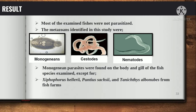I am Aaron Clark D. Zalsos and I will discuss the results. Most of the examined fishes were not parasitized. The metazoans identified in this study were the monogeneans, the cestodes, and the nematodes. Monogenean parasites were found in the body and gills of fish species examined, except for Xiphophorus helleri, Puntius sachsi, and Tanichthys albonubes from fish farms Araquari and Biguacu.